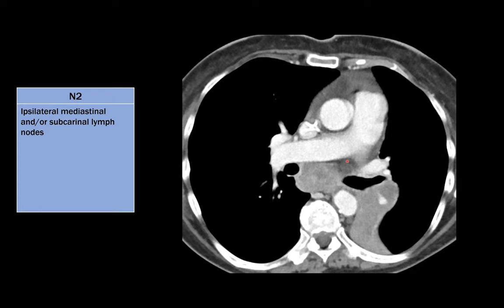N2 is ipsilateral mediastinal and/or subcarinal lymph nodes. In this case, we have a left lower lobe tumor that causes complete collapse of the left lower lobe, and we have a subcarinal lymph node. Because it's a subcarinal lymph node, that's treated as an ipsilateral node. If this tumor were on the right side, it would still be an N2 node.